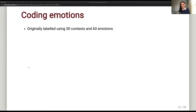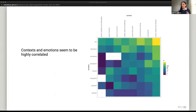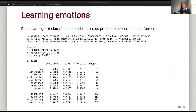So we narrowed it down and ended up with something like eight contexts and eight emotions. Surprisingly, most of the tweets were about joy — it's less surprising that most were about leisure and hobbies — but we were quite genuinely surprised about the positivity of the tweets we were looking at, especially considering what is normally understood as going on on Twitter. I created a deep learning text classification model based on pre-trained document transformers and tried to learn separately the emotions and the context. This is still under development and not yet published.